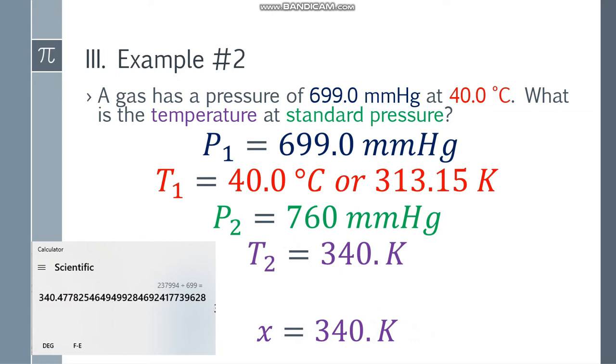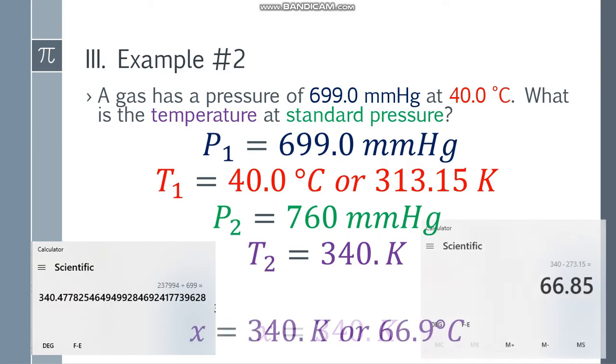However, if they ask you for Celsius, you can just convert it to Celsius. Like this: I subtract 273.15 from 340, so the answer is 66.85. With 3 significant figures, that's 66.9. Since 5 rounds up, it becomes 66.9 degrees Celsius.